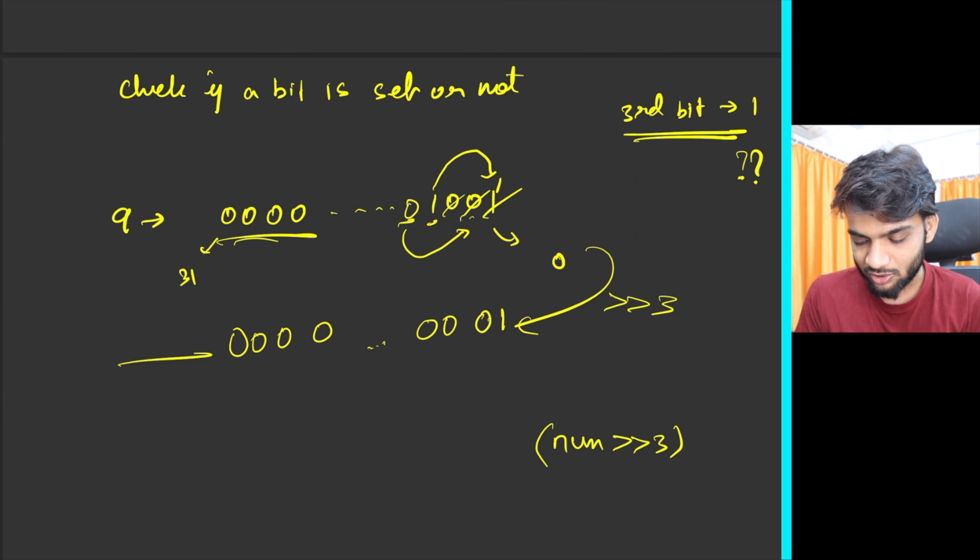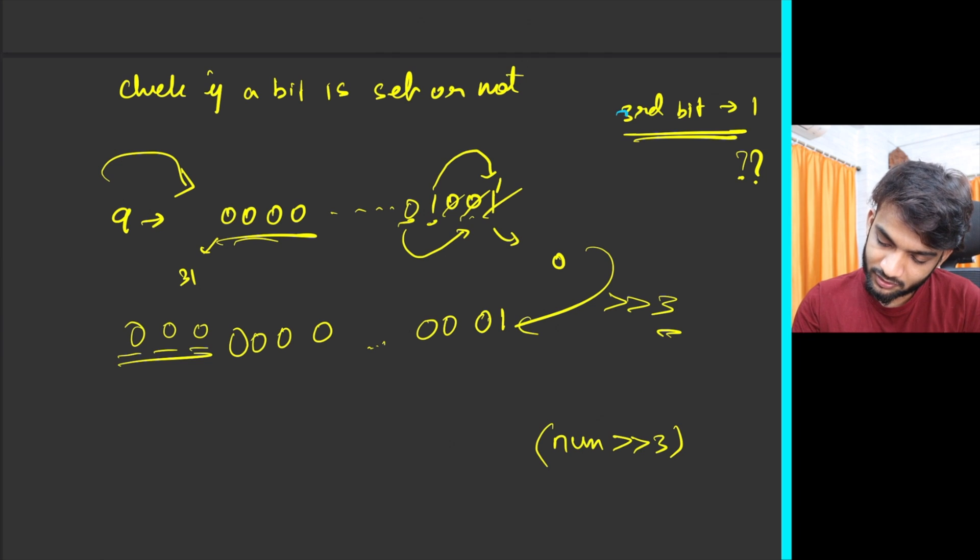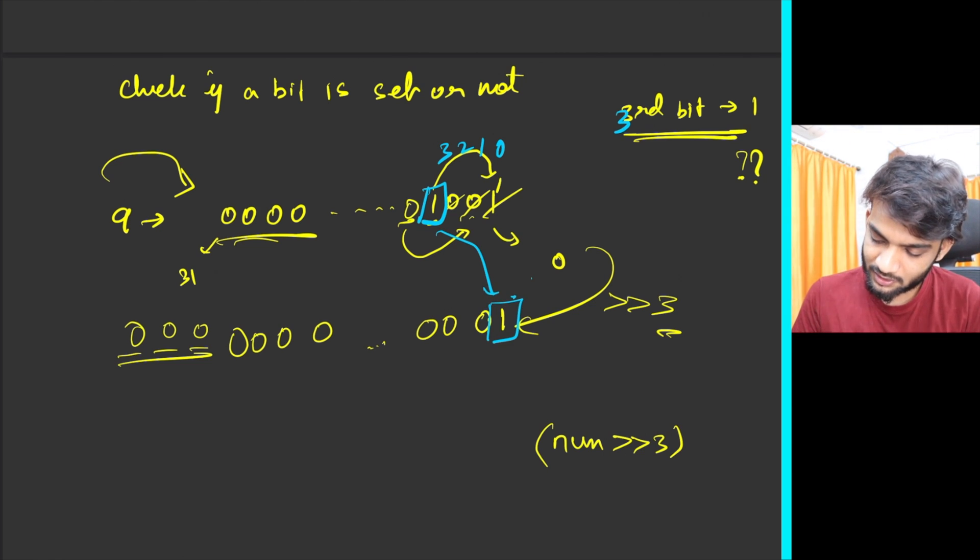It's a three shift. The entire binary shifts by three places. This one comes over here, this zero comes over here, then zeros. Now still there will be three places left. These three places will be filled with zeros which will come from the outer area.